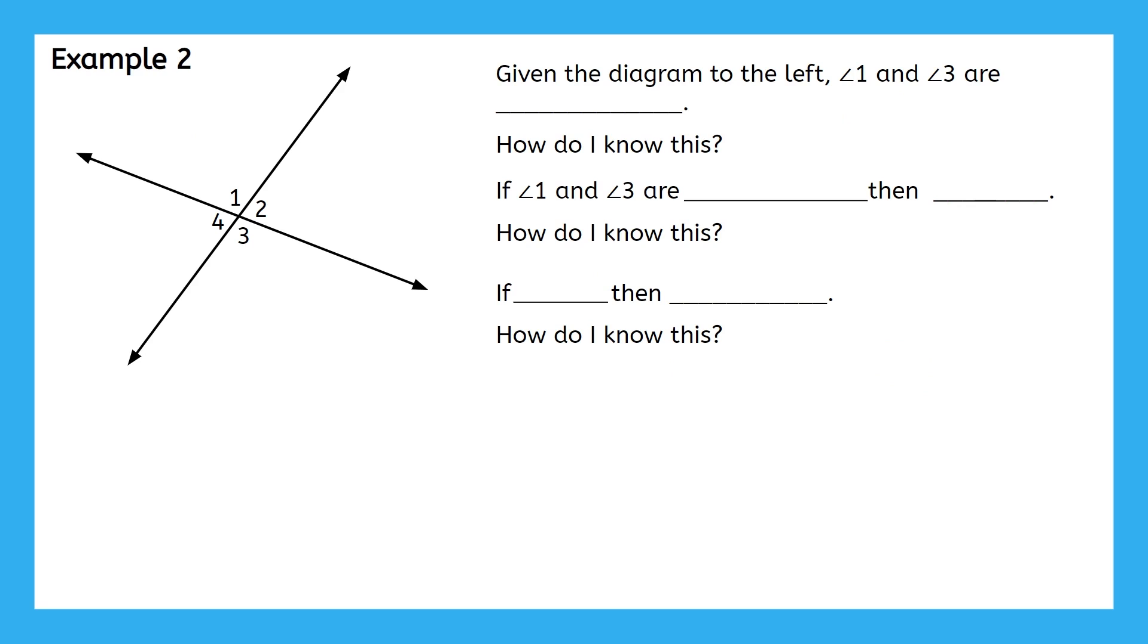Next up is example 2. We have a new diagram with 4 new angles. Let's work our way down the list of statements and questions on the right starting from the top. Given the diagram to the left, angle 1 and angle 3 are blank. This is a great preview of the process of writing out proofs. You always want to start as simple as possible, so don't worry about the relationship between their measures yet. What type of angles are 1 and 3 together?